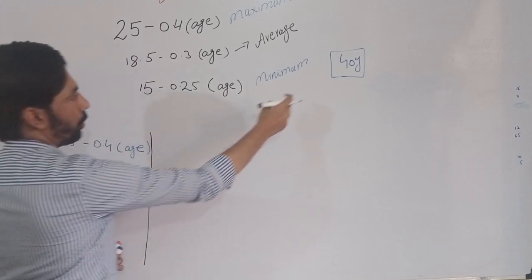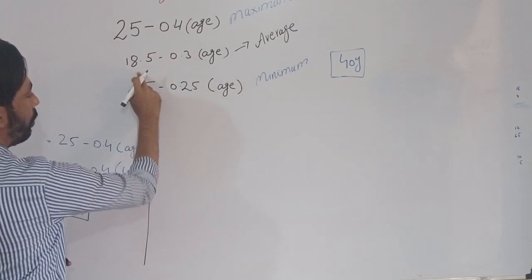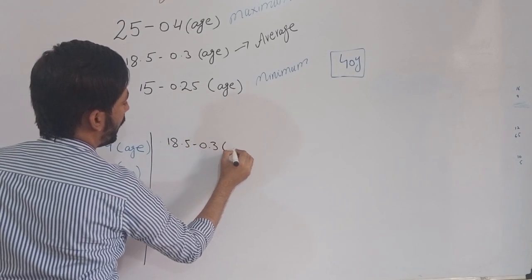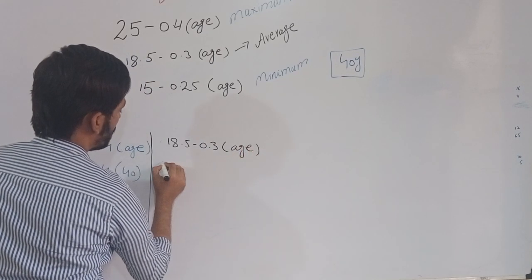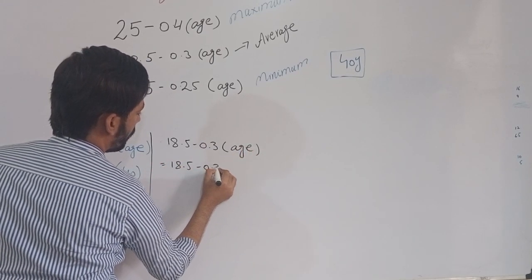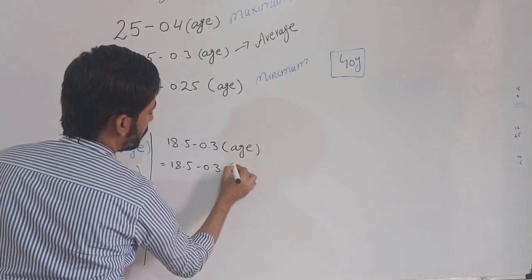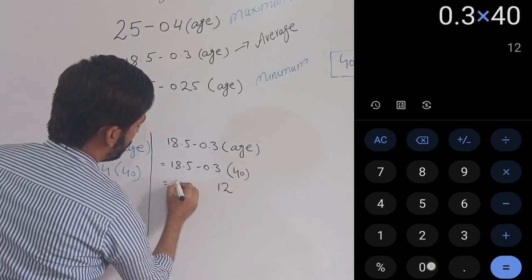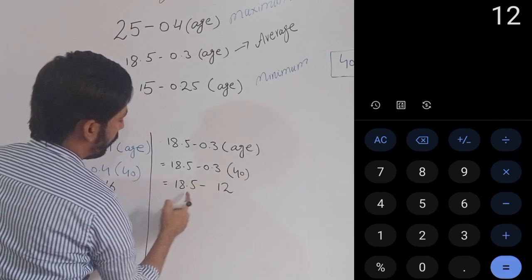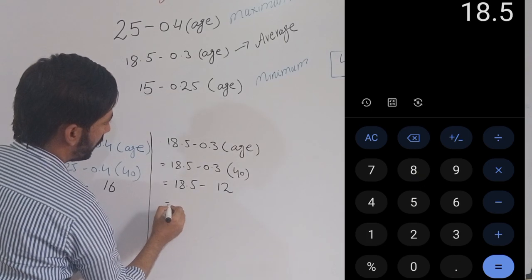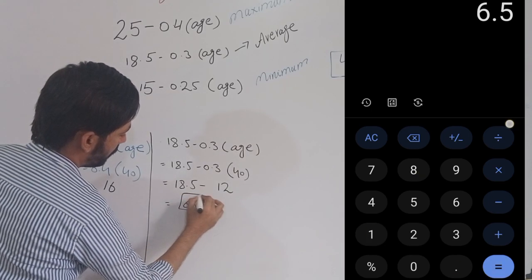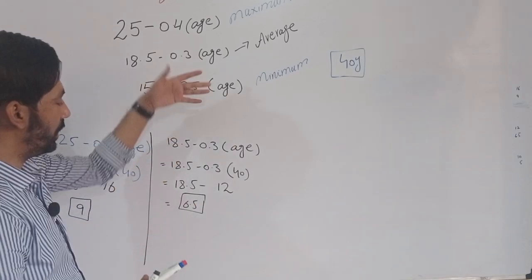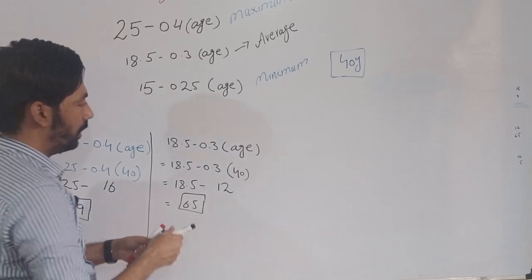At 40 years of age, we find the average amplitude of accommodation using the formula: 18.5 minus 0.3 times age. Age is 40 years. Multiplying 0.3 by 40 gives 12. Subtracting 12 from 18.5 gives 6.5. So the average amplitude of accommodation at age 40 is 6.5 diopters.